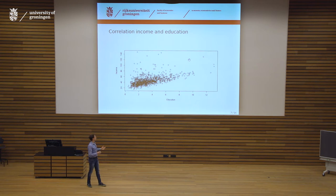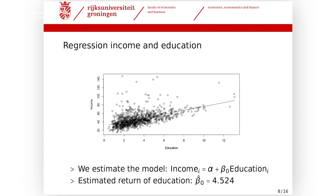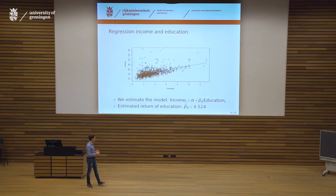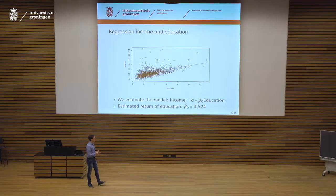Now we have the data and want to answer what the return of education is. We define a model — put some structure on the data — and say: suppose the data follows a certain structure; what is the relation between income and education? We say that income of individual i equals alpha plus beta-zero times education of individual i. For every extra year of education you get beta-zero extra yearly income. It's a linear model.